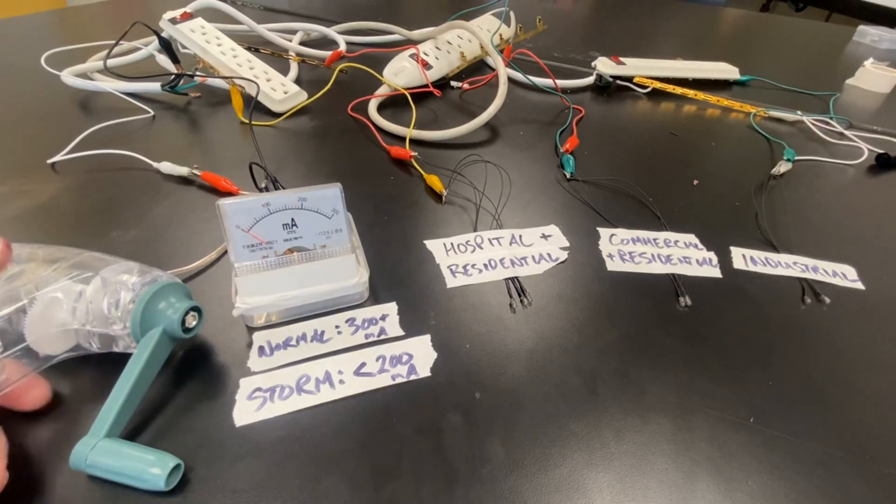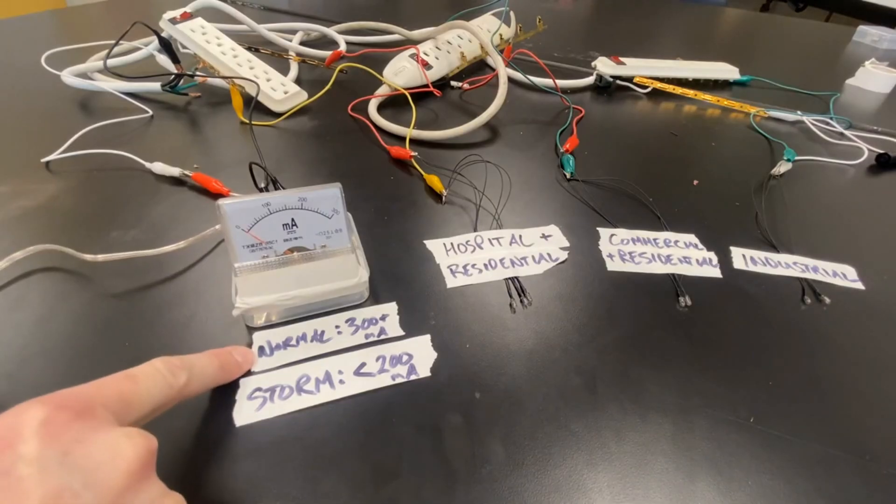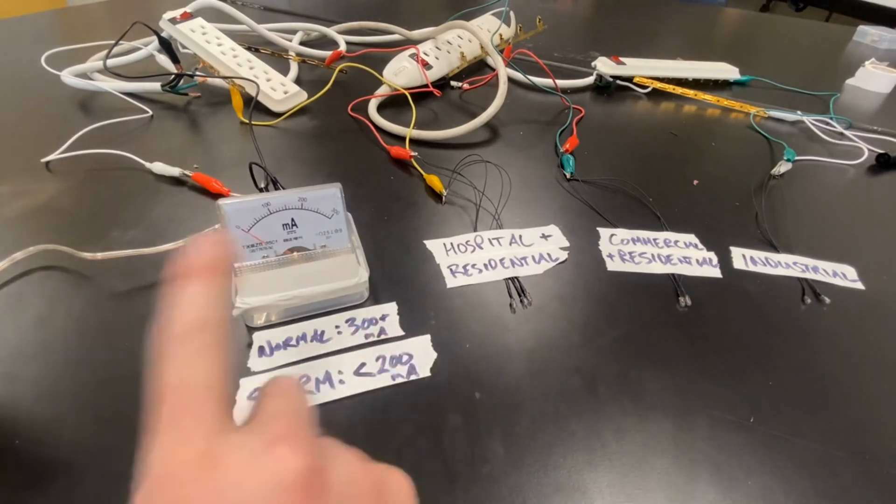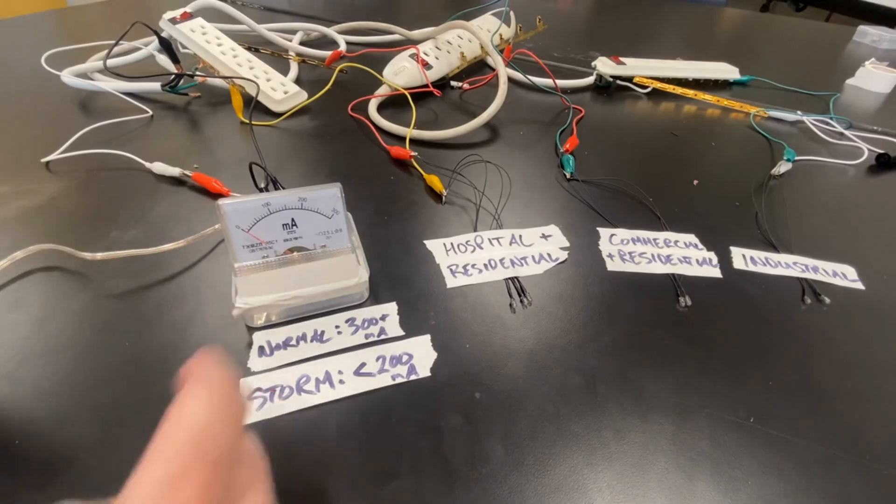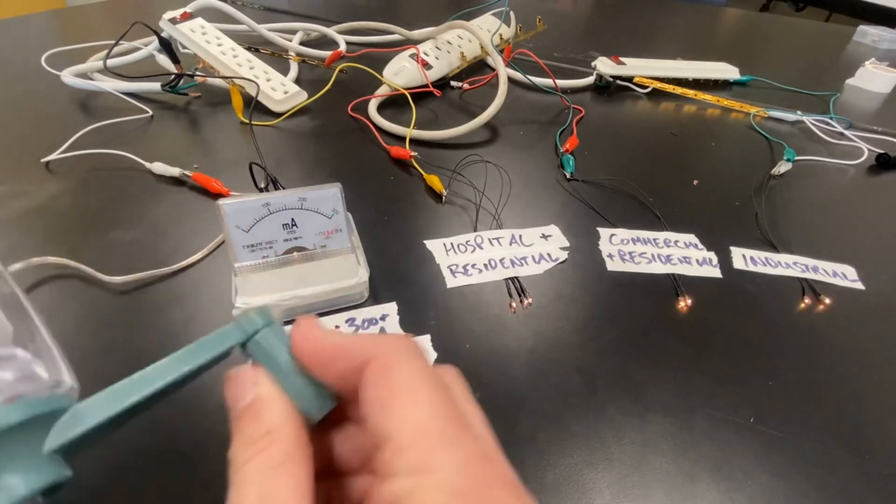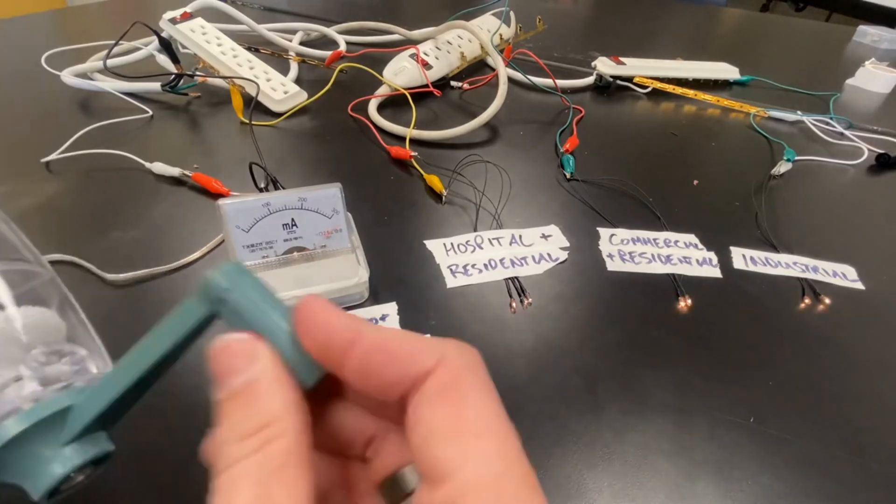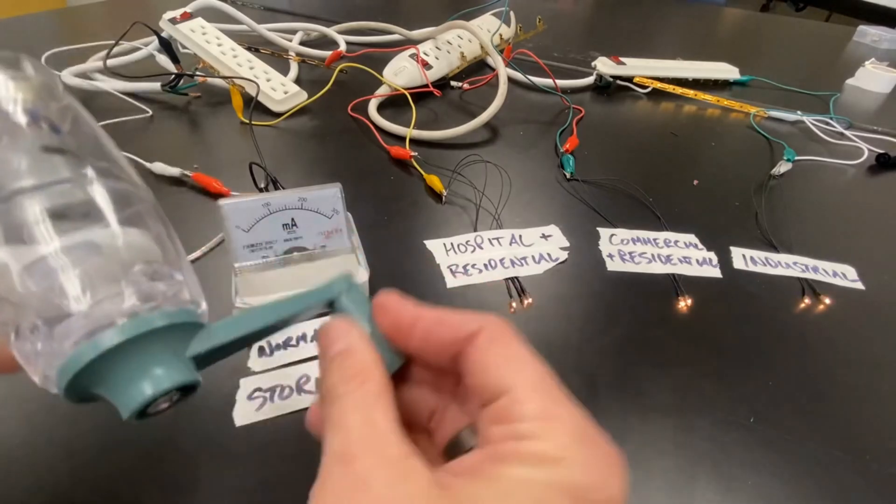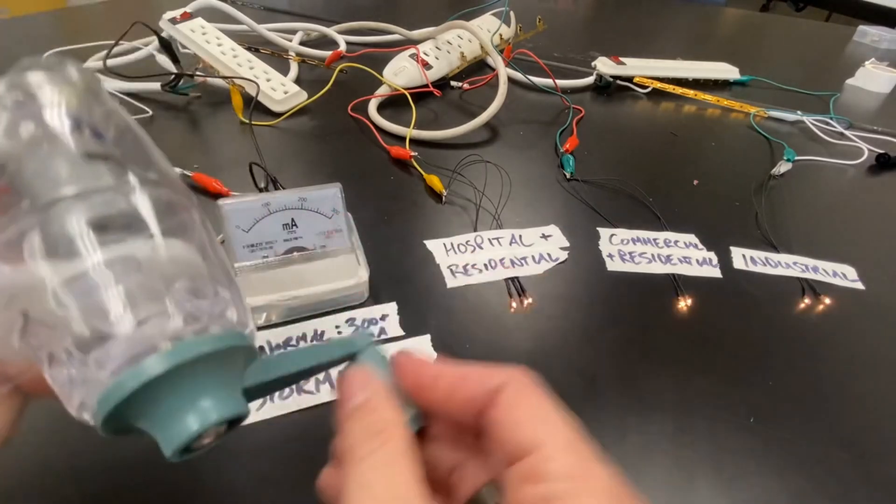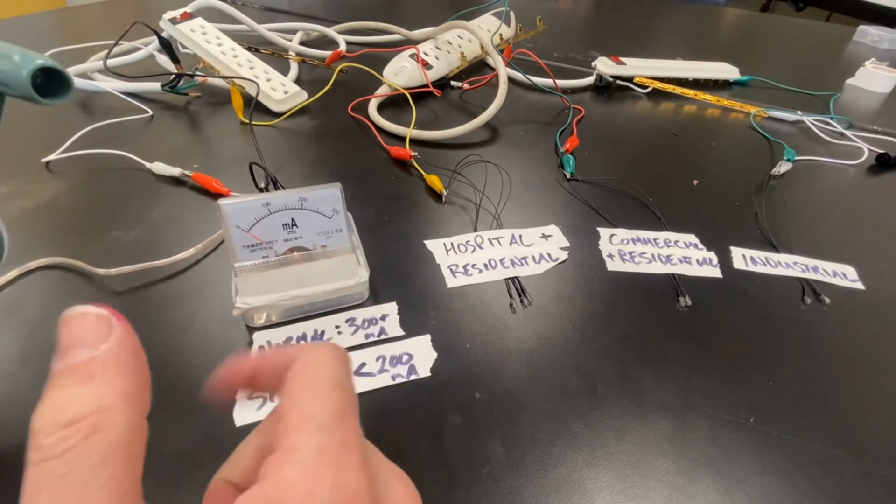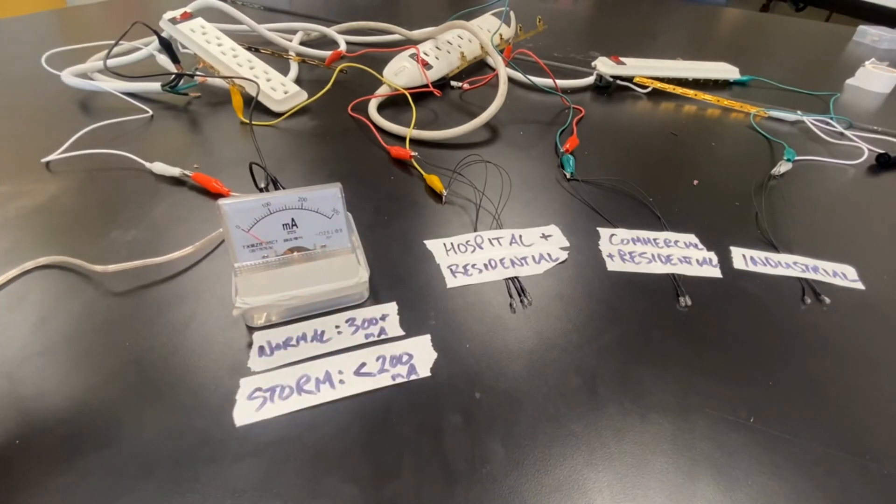So when we have plenty of power, that is when things are normal, we have 300 plus milliamps on this meter to work with. So if I crank this generator, I see that all three substations turn on. All three districts have plenty of electricity to work with. And this meter is above 300. We don't know what the exact number is, but we know that it's above 300.